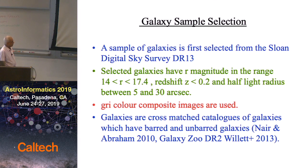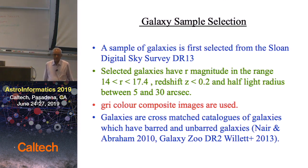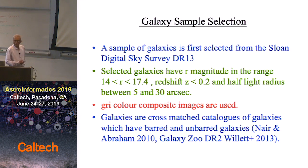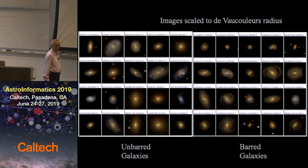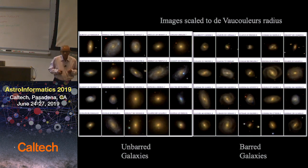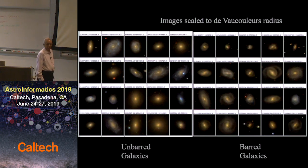These galaxies are cross-matched with catalogs of barred and unbarred galaxies — the Nair and Abraham catalogue and Galaxy Zoo. Typically you require much larger samples to train deep learning networks, which is one big disadvantage, and astonishingly we do not have sufficiently large samples in astronomy, so all kinds of tricks have to be used. Here are sample images: these are unbarred and these are barred. In some cases the bar is very clear, but in other cases it may be more diffuse, or there could be a combination of features which mimic a bar.